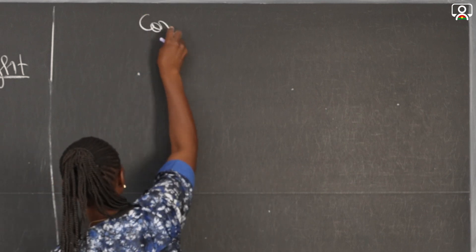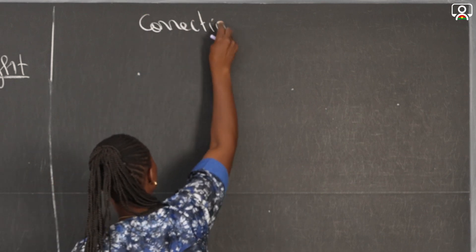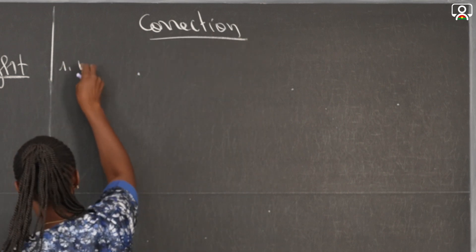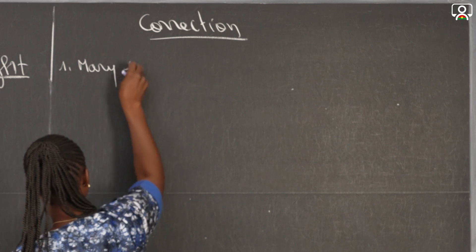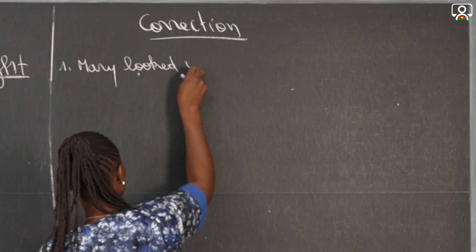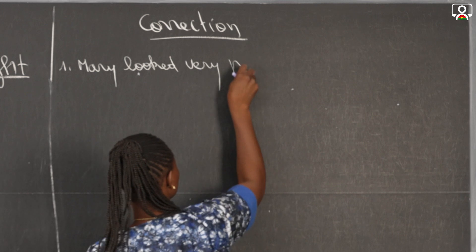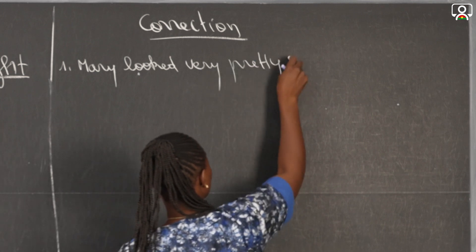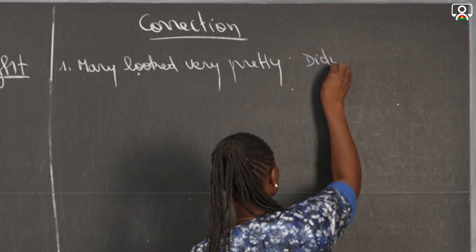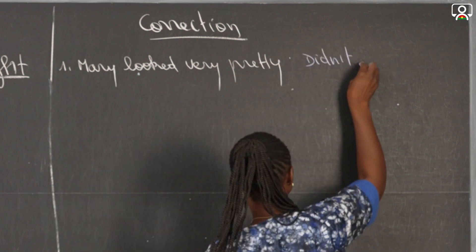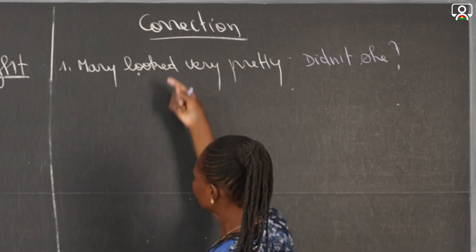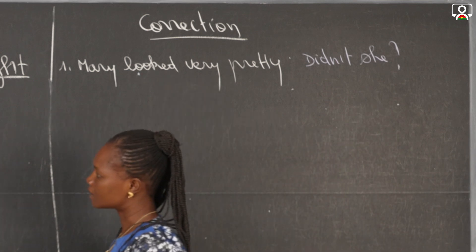Correction. The first sentence is: Mary looked very pretty. So the tag is going to be 'didn't she', because our verb is in the simple past.